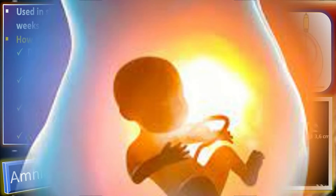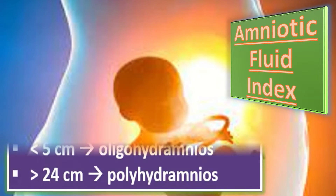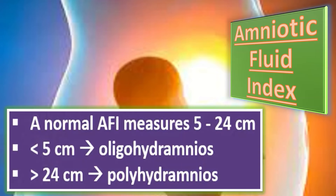Add the four measurements together to get the amniotic fluid index. A normal AFI measures between 5 to 24 centimeters. When AFI is less than 5 centimeters, that is called oligohydramnios, and when AFI is more than 24 centimeters, it is called polyhydramnios.